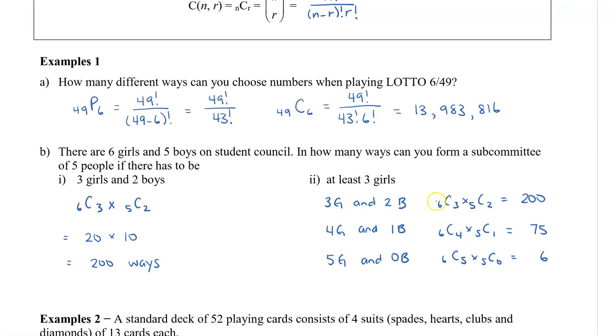Now each of these combinations, the 200, the 75, and the 6, these are all separate. So we can have 3 girls and 2 boys, or another situation is we can have 4 girls and 1 boy, and another situation, we can have 5 girls and 0 boys. So what we're going to do with the answers to these is we're going to actually add all of them up. So this will give us 281 ways.